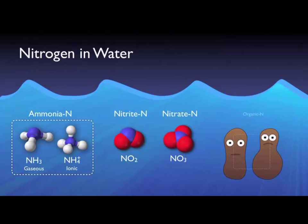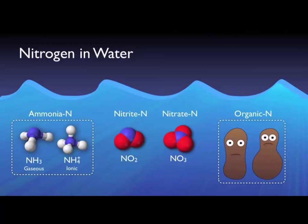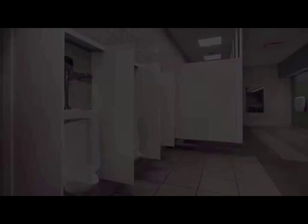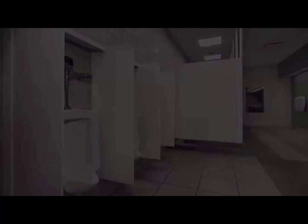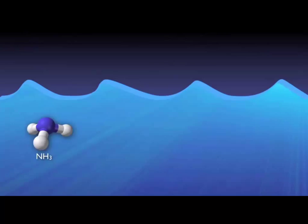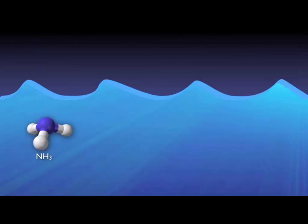Total nitrogen is the sum of all types of nitrogen. TKN (Total Kjeldahl Nitrogen), named after scientist Johann Kjeldahl, is the sum of only organic nitrogen and ammonia nitrogen. TIN (Total Inorganic Nitrogen) is total nitrogen minus organic nitrogen. In simplistic terms, nitrogen is introduced into the sewer system, and almost all organic nitrogen like urea is immediately hydrolyzed into ammonia. In water, gaseous ammonia NH3 is almost entirely converted to ionized ammonia, or ammonium NH4+. Specialized autotrophic bacteria called nitrifiers convert ammonia to nitrite and then to nitrate.